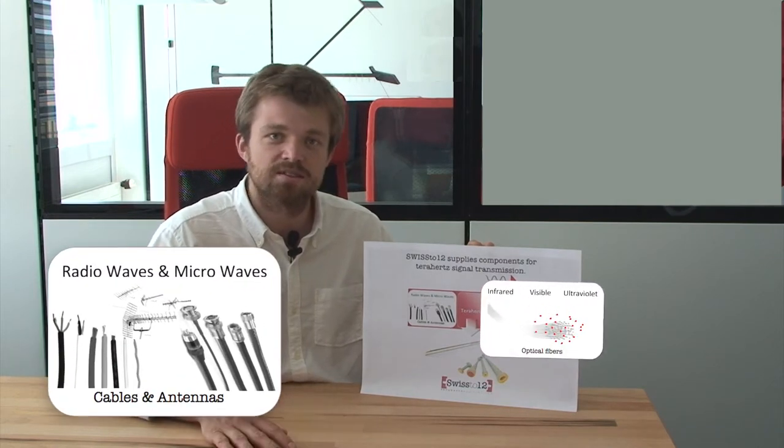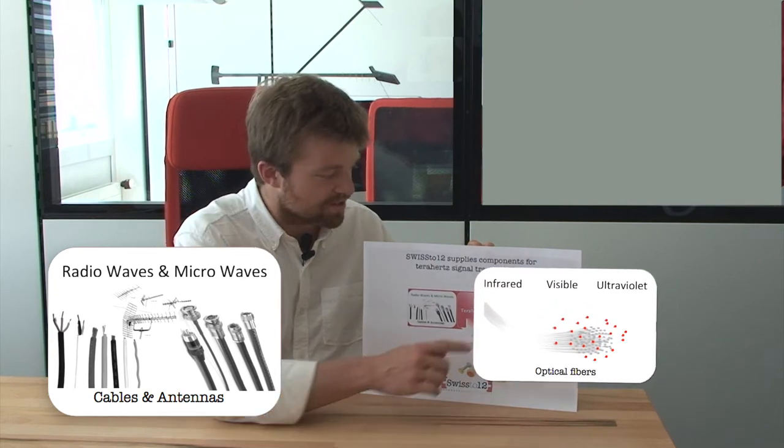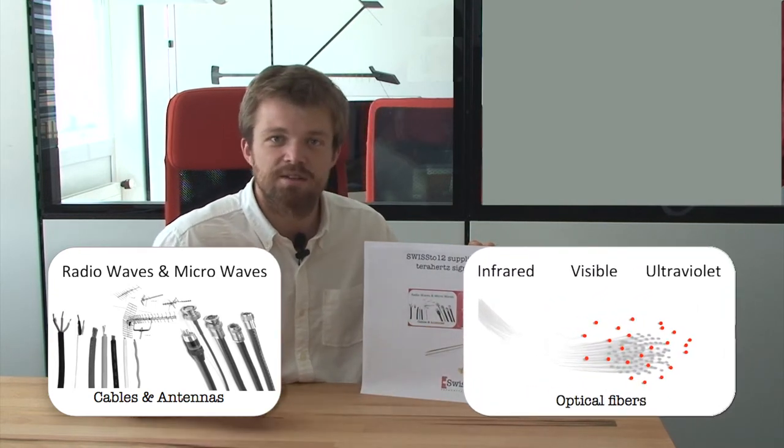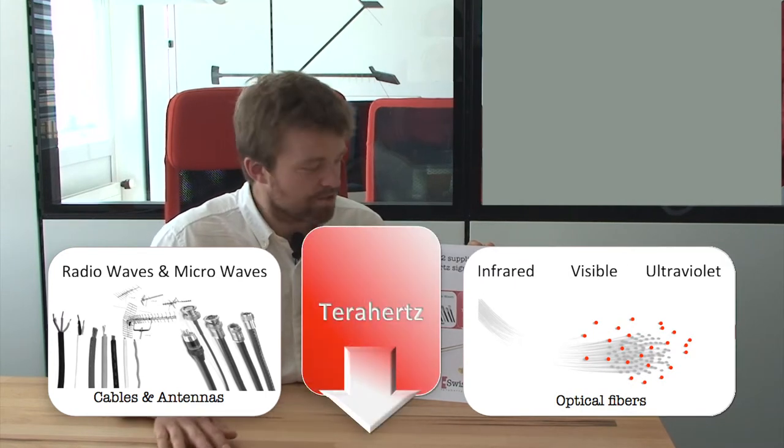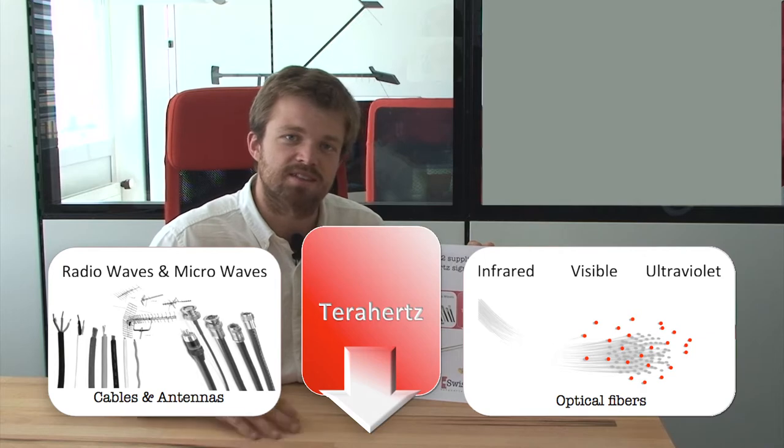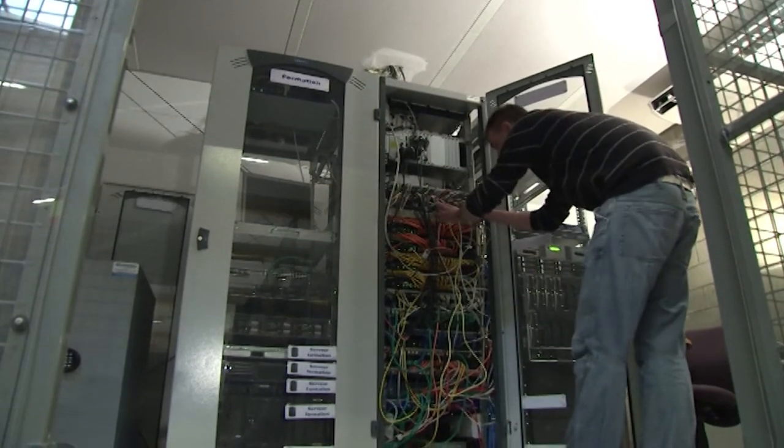High-frequency signals in the domain of optics, such as infrared, visible or ultraviolet light, can be channeled by using optical fibers. In between these two regimes lie terahertz signals that cannot be transmitted with either one of these conventional technologies.